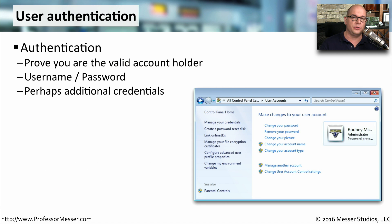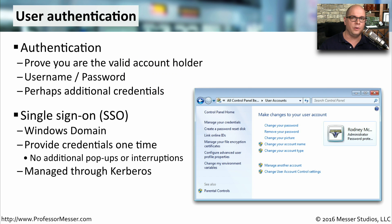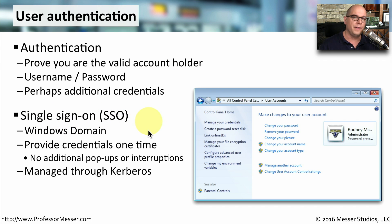The way that you provide access to resources on your computer is by requiring users to authenticate to your system. This authentication in Windows is usually done with a username and password, but there may be other factors of authentication that you can add as well. If you're part of a Windows domain, you may find that you authenticate a single time with a username and password and yet have access to many different resources located in many places on the network. This is provided through a process called single sign-on, or SSO, where you provide your credentials one time and those credentials apply to all of the different resources in that Windows domain.